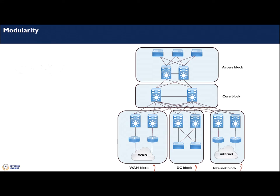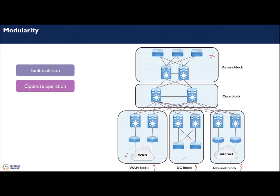Modularity provides fault isolation — if there is a fault in the access block, you don't have to troubleshoot the WAN or data center, and the fault is limited to that block without impacting others. It also optimizes operations: if you want to do an upgrade on the internet block router, you don't have to worry about the access or WAN block. Similarly, replacing a box in the data center doesn't affect the access block.